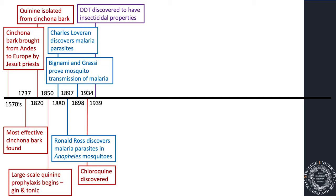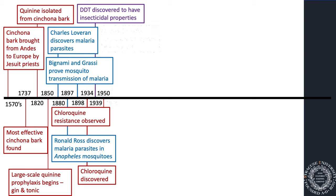Now we had chloroquine and DDT — two very important tools to fight malaria. Soon after chloroquine was discovered, it was started to be put in salt, and then resistance began to be observed, where the parasite grew resistance to the drug. Still, there was a lot of hope around DDT, and chloroquine was somewhat effective. The World Health Organization established the Global Malaria Eradication Program.